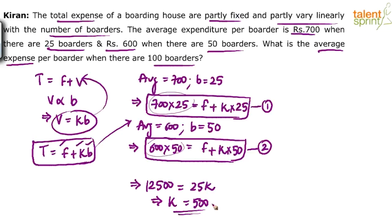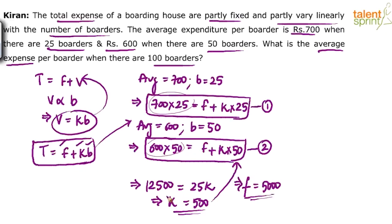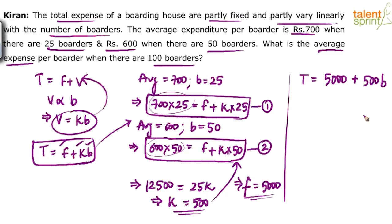Now substitute k = 500 back into one of the equations. Using the second equation: 500 × 50 = 25,000. And 600 × 50 = 30,000. So f = 30,000 − 25,000 = 5,000. So f is 5,000 and k is 500. We can now say the total expenditure T = 5,000 + 500 × b, where b is the number of borders.